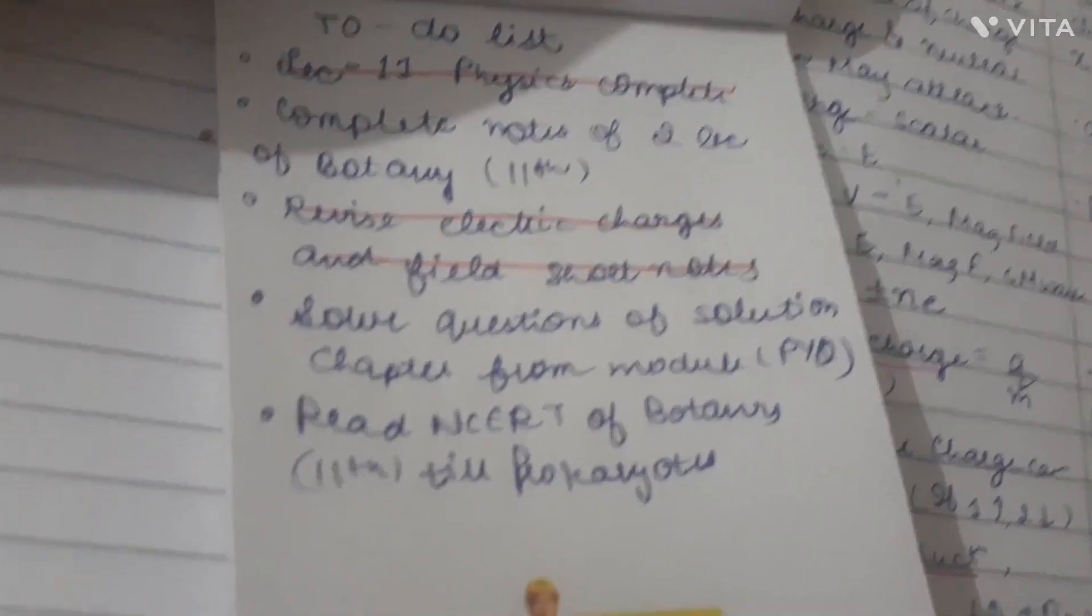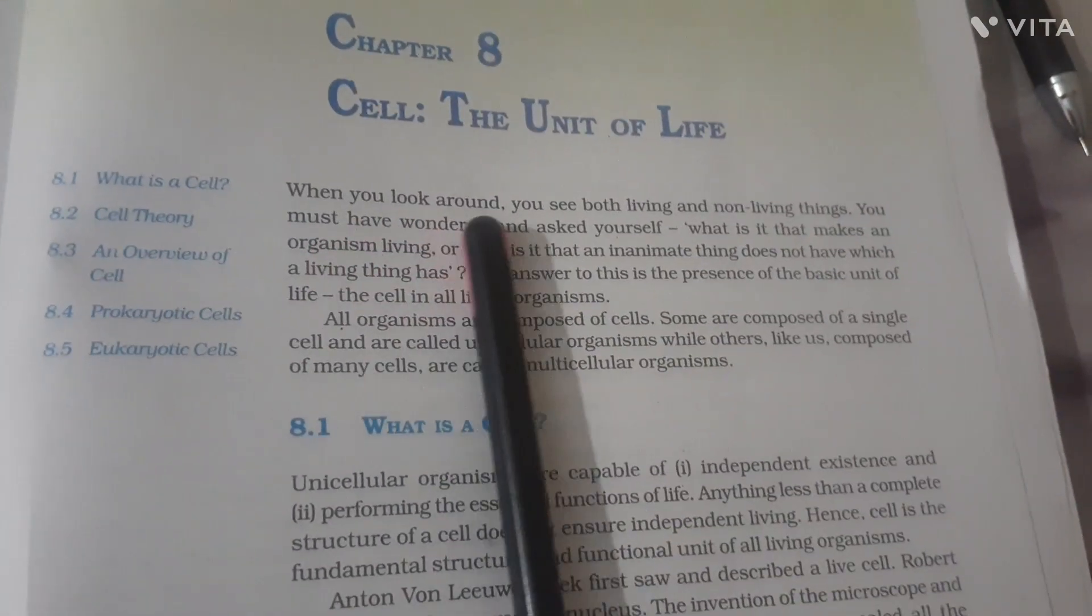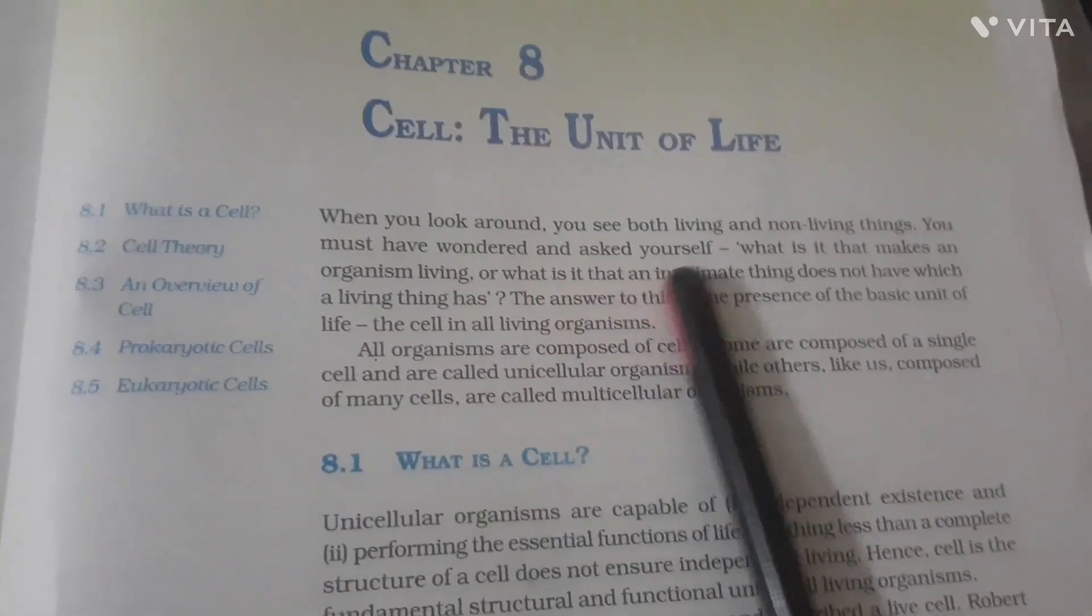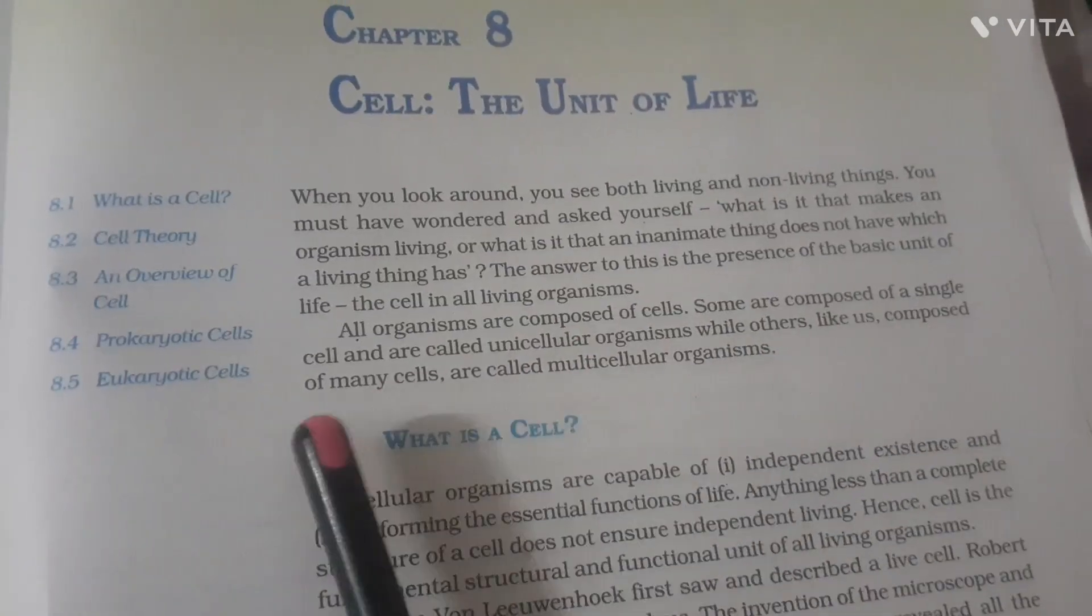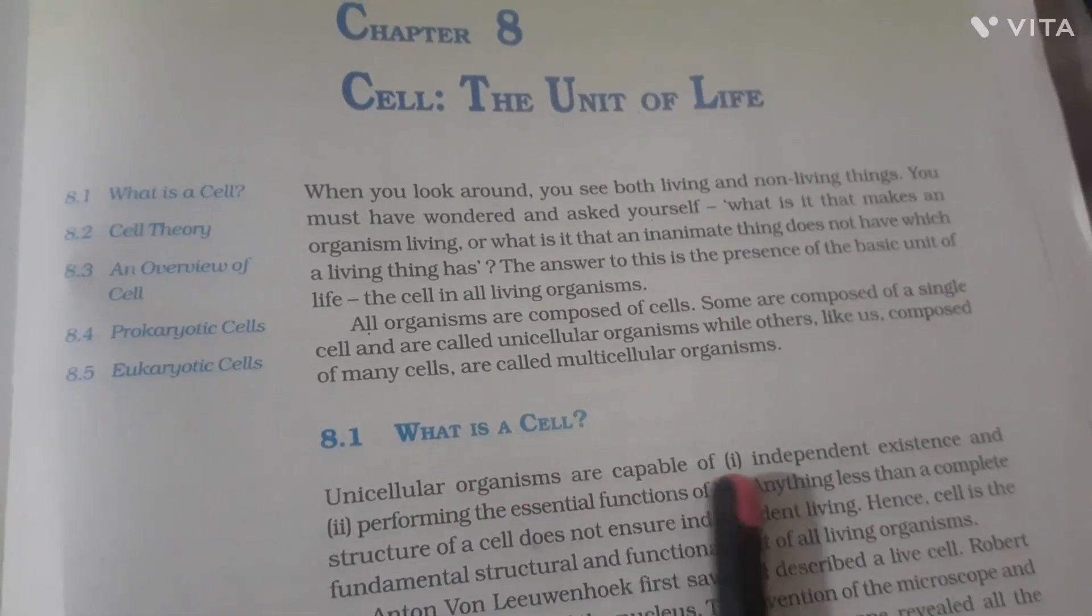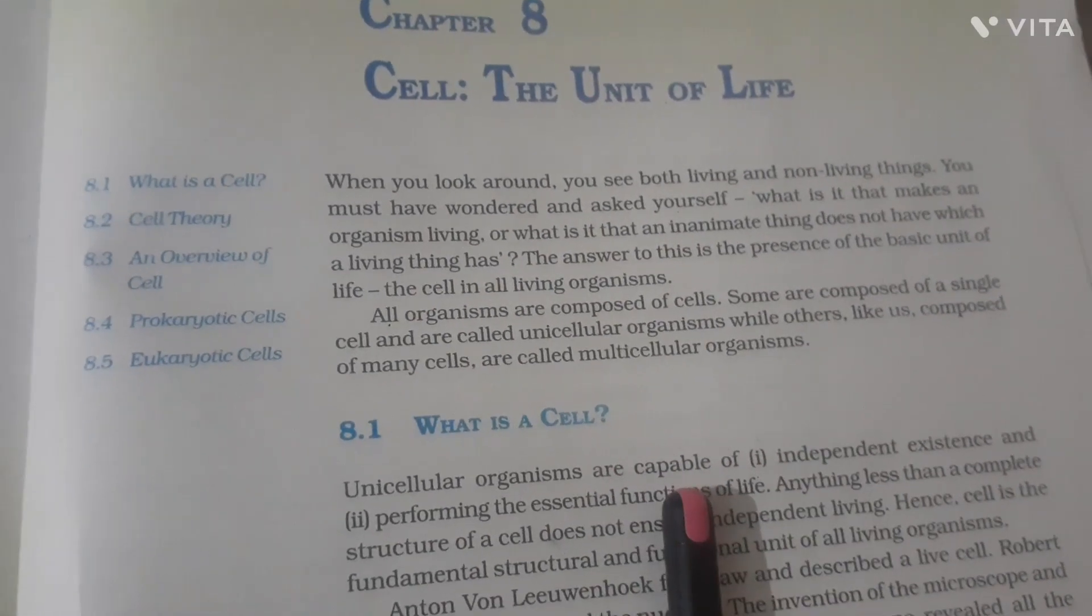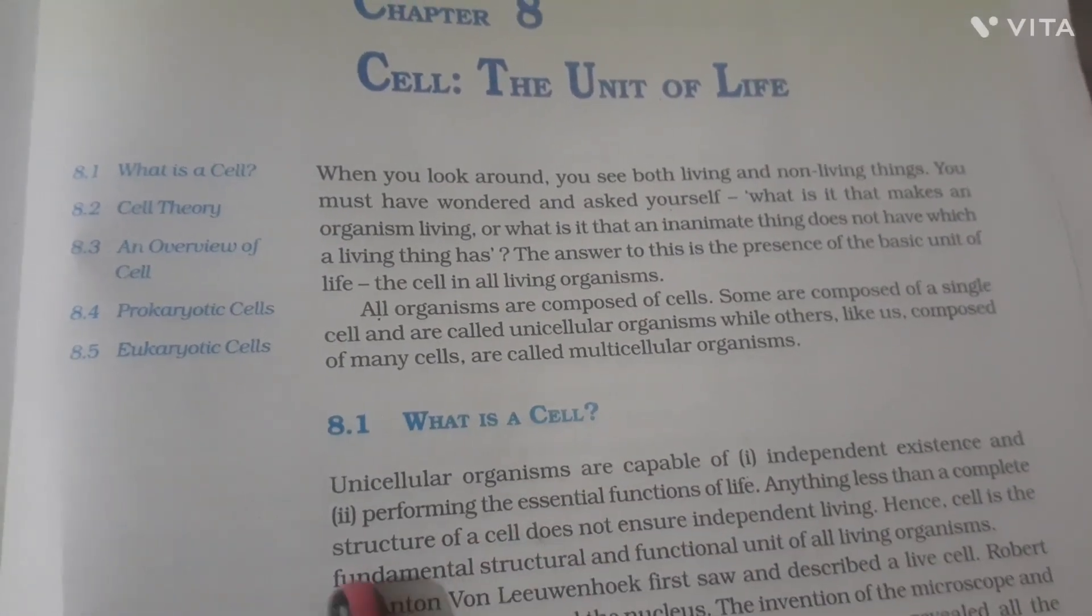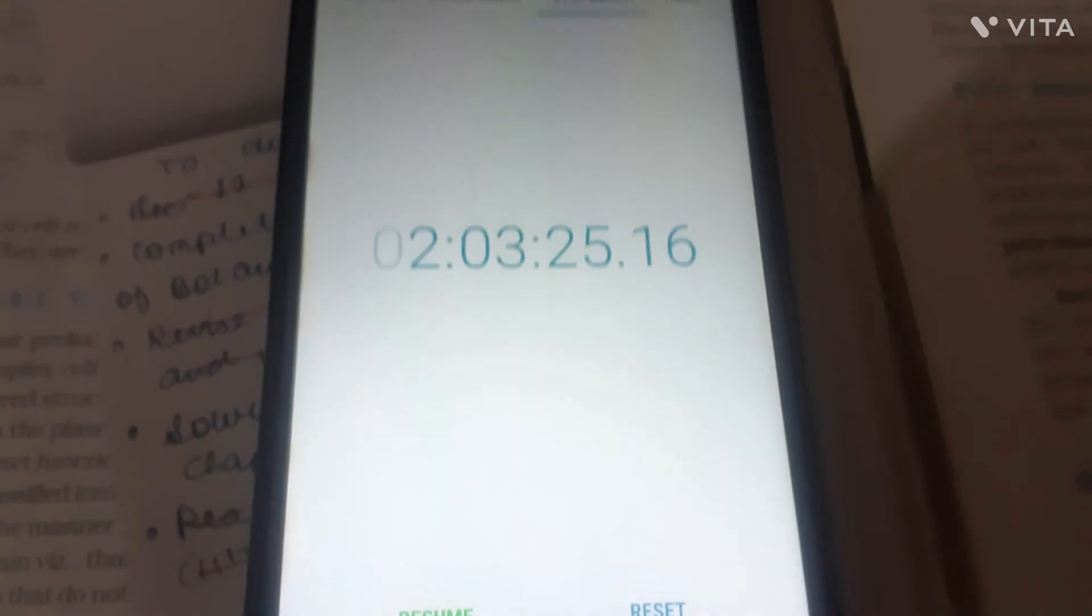My next task is to read NCERT of botany 11th till prokaryotes because I don't feel like writing right now. I've reached the Cell: The Unit of Life chapter, and I need to complete notes for two lectures from this chapter. Sir has taught up to prokaryotes, so before making notes, I read the NCERT once. There are so many things to memorize in this chapter, especially cell sizes - they're not getting memorized. That's why I invested more time reading this NCERT. The NCRT is finishing now, yes! I finished the last part on ribosomes that sir taught. Time elapsed is about 2-3 hours of studying.